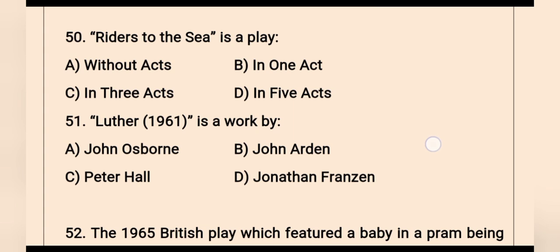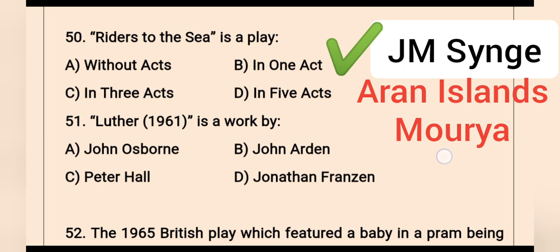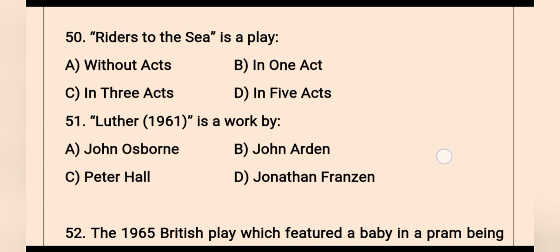Question 50: Riders to the Sea — how many acts does this play have? Riders to the Sea is a one-act play by Irish literary figure J.M. Synge, published in 1903. It is set in the Aran Islands, and its central character is Maurya.